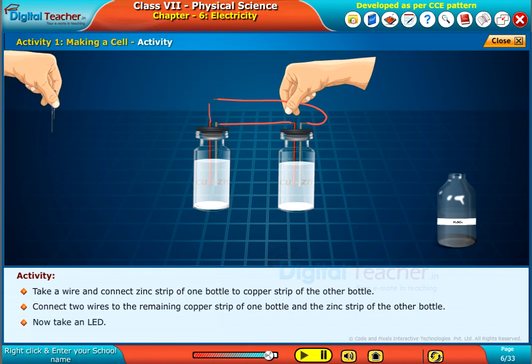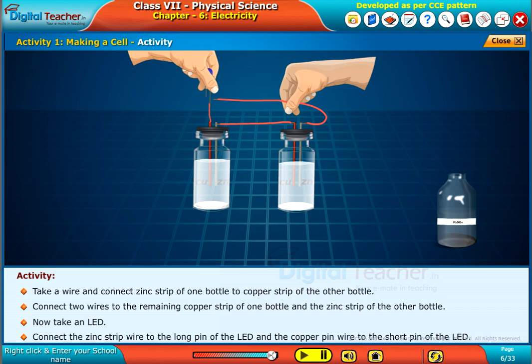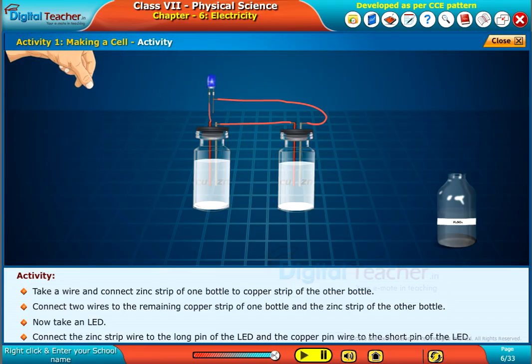Now take an LED. Connect the zinc strip wire to the long pin of the LED and the copper pin wire to the short pin of the LED.